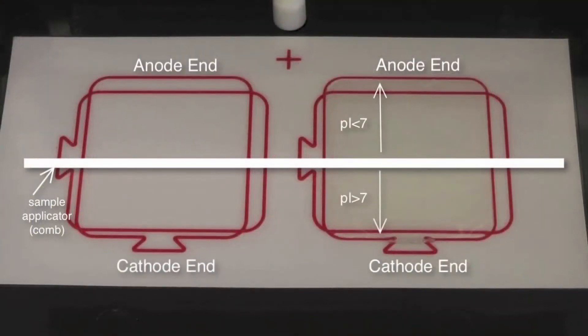By placing the comb in the middle of the gel, proteins with an isoelectric point greater than 7 will migrate towards the cathode while proteins with an isoelectric point below 7 will migrate towards the anode.